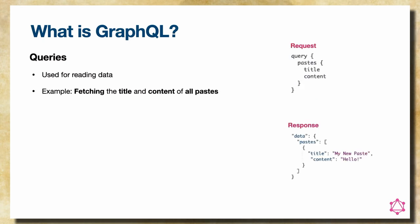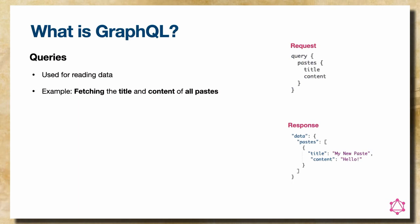Once you have a schema, you can start querying data. To read data from a GraphQL endpoint, you use queries — primarily for reading operations. You can see a JSON request asking for the content and title of all pastes on the website. The response mirrors the request structure: we get an array of pastes with only the title and content — exactly what we asked for. We didn't receive the owner name or whether it's public or private. That's what GraphQL is all about.